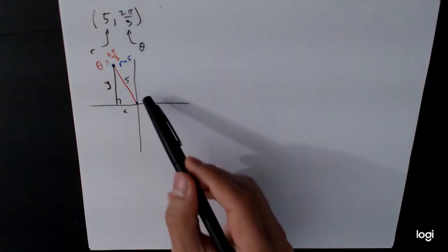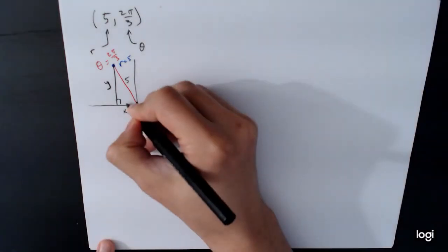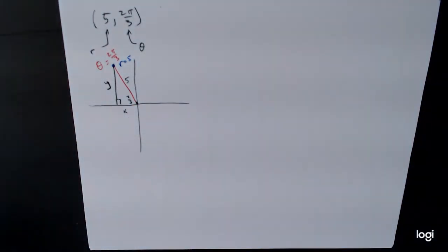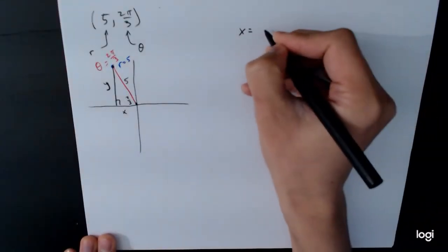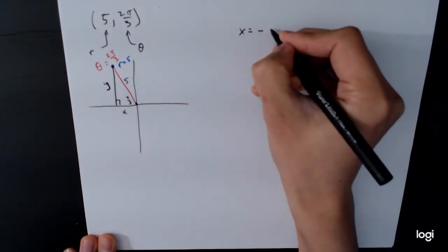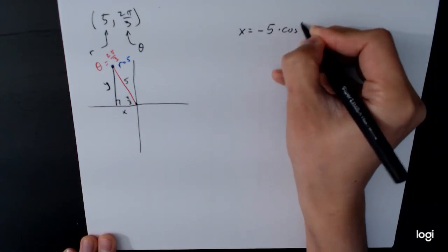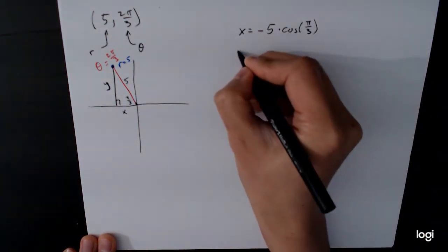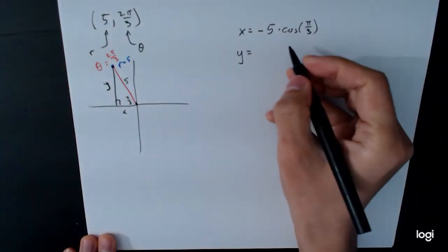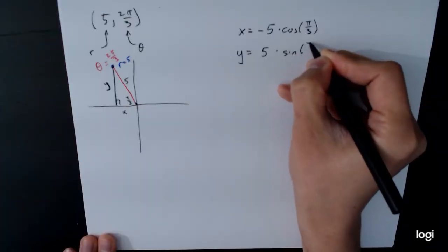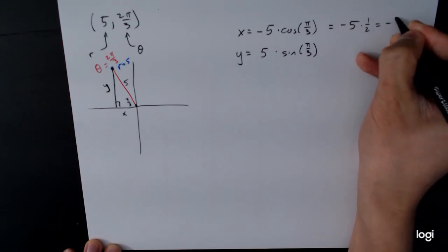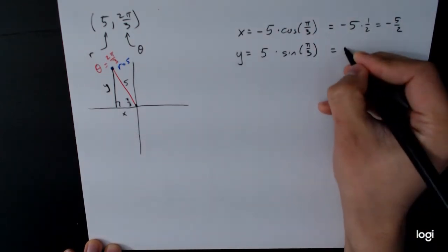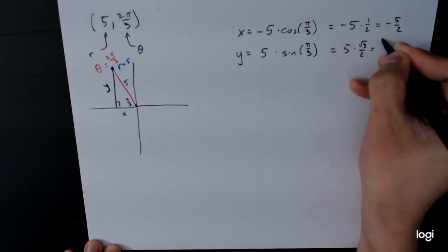And the hypotenuse of that right triangle is 5. What is the angle? Well, 2π over 3, it's in the second quadrant. So we have to use a reference angle. The reference angle is going to be π over 3. And now we just have a triangle that we can solve for x and y from. So our x value is going to be, well, it's going to be a negative value. It's going to be negative 5 times cosine of π over 3. And then the y value is going to be 5 times sine of π over 3. And so if we do the calculation here, this is negative 5. Cosine of π over 3 is going to be 1 half. So this is negative 5 halves. Sine of π over 3 is going to be root 3 over 2. So it's going to be 5 times root 3 over 2, which is just 5 root 3 over 2.